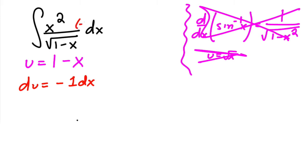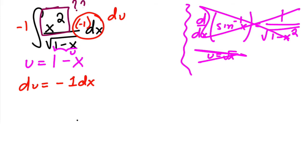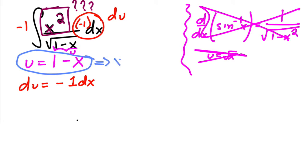With u = 1 − x, du = −1 dx. So we just need a −1 here and put −1 on the outside. The √(1−x) becomes √u, and the dx becomes du — but the problem is we still have x² in the integral. We can't have both x's and u's in the integral. But can we convert the x's into u's? Hint: if u = 1 − x, then x = 1 − u.